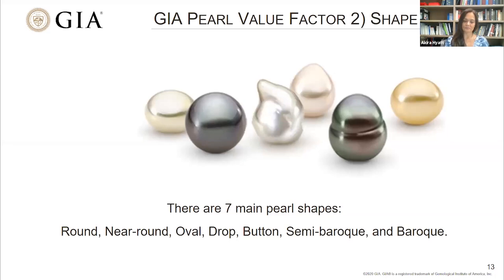Baroque pearls are pearls that are completely asymmetrical and do not have any identifiable outline. All pearl types occur in the full range of shapes. Additionally, Chinese freshwater pearls are often beaded to produce specific geometrical or fanciful shapes such as rectangles or hearts, and those can be described as they appear.